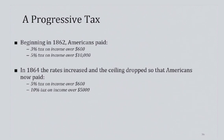Beginning in 1862, Americans paid 3% tax on income over $600 and 5% tax on income over $10,000.